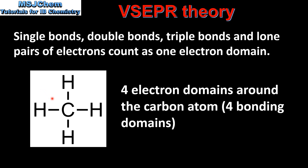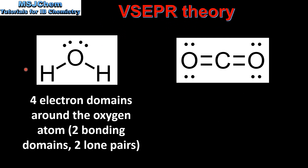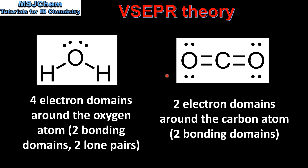Here we have the Lewis structure for CH4, which is methane. Around the central carbon atom there are 4 electron domains, which are 4 bonding domains. Here we have the Lewis structure for H2O. Around the oxygen atom there are 4 electron domains — 2 bonding domains and 2 lone pairs of electrons. On the right we have the Lewis structure for CO2, carbon dioxide. Around the carbon atom there are 2 electron domains, which are both bonding domains.